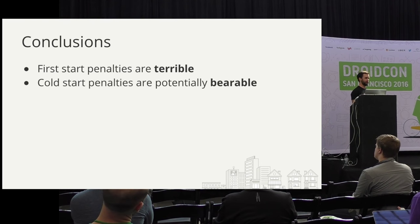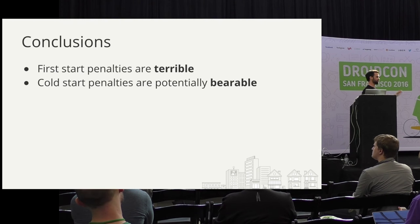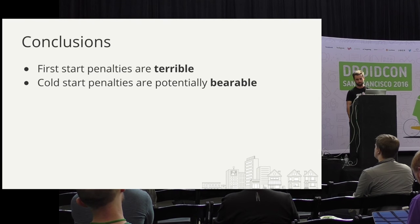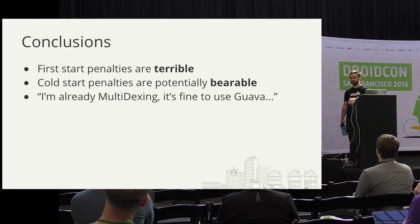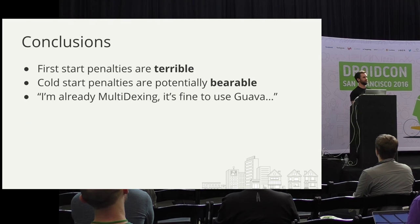The cold start penalties were bad — a couple percent at 5,000 over and 10% at 20,000 over — but those are potentially bearable. If you're a smaller team and you're not adding methods super fast, it might be a good tradeoff: there's a startup penalty, but you care more about features. Maybe before this gets to be too much of an issue, you can set minSdk 21 and not worry about it. Lastly, this data immediately refutes the idea that once you're already Multidexing, you can just throw in guava or any other dependencies — the method count still matters even after you cross the Multidex boundary.